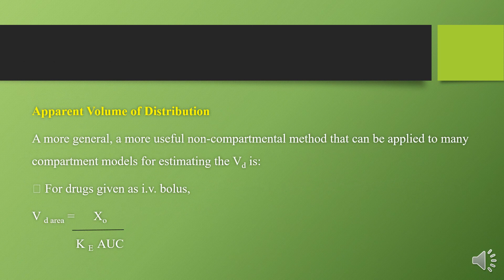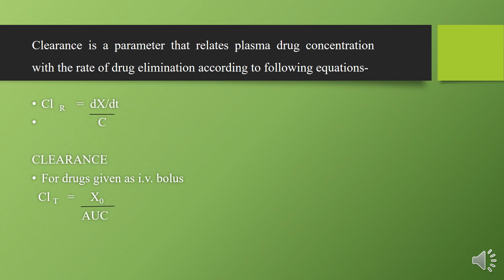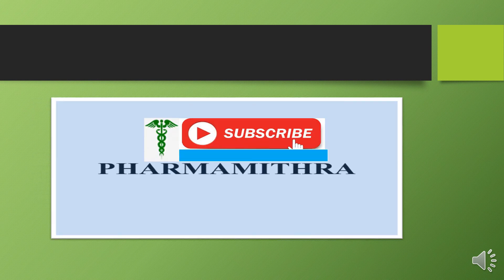The next parameter is apparent volume of distribution. For IV bolus, Vd(area) = X₀ / (Ke × AUC). Clearance is a parameter that relates drug concentration with elimination rate: CLr = (dX/dt) / C. In terms of IV bolus, CLt = X₀ / AUC.